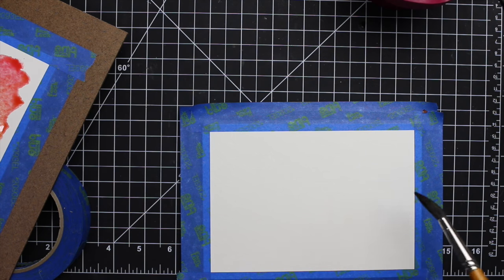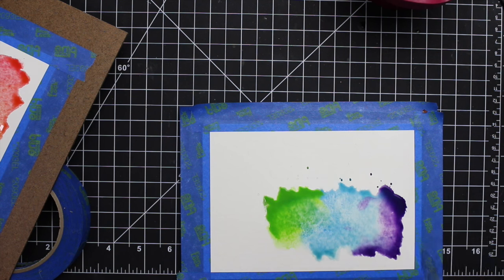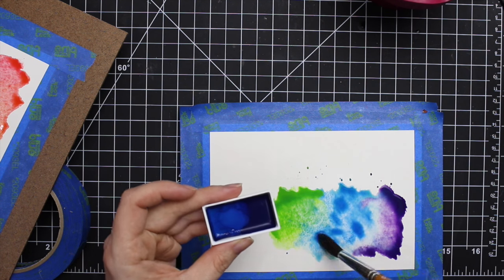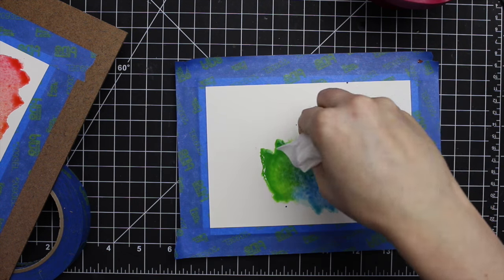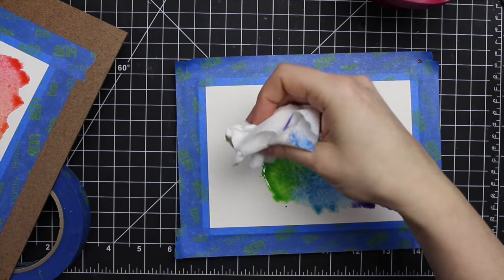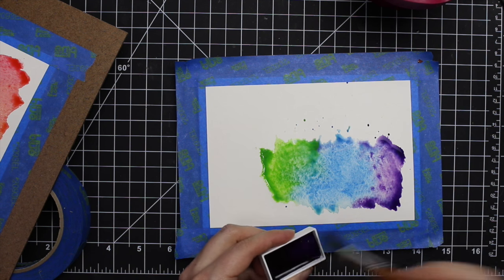And then for my second one I decided rather than getting the whole thing wet I only wanted kind of the lower corner. So I got that wet and then dropped in the green, the blue, and the purple. And I wanted to intensify it a bit so I picked up the color straight from the little watercolor cake and then dropped that in. And then same thing, the color was sort of pooling along the edges. So I picked that up with a tissue and set that aside to dry as well.